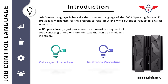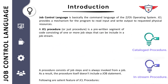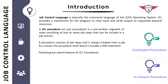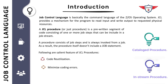JCL procedures are divided into two categories: the first one is catalog procedure and the second one is in-stream procedure. Always remember that a JCL procedure will not have a job card, because it is invoked from a JCL. It will always have job steps that include other relevant job control statements such as DD statements and EXEC statements. The benefits of using JCL procedures are: code reusability, minimizing coding errors, and improving productivity by eliminating duplication of work and improving the efficiency of the overall process.